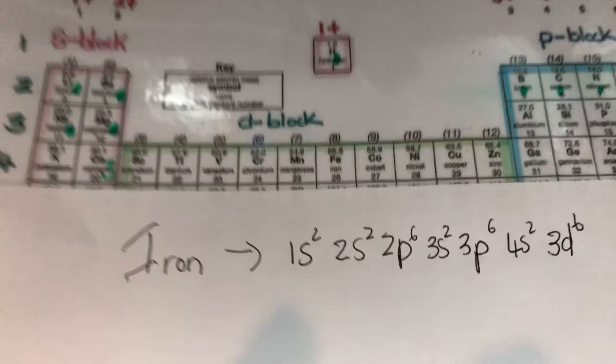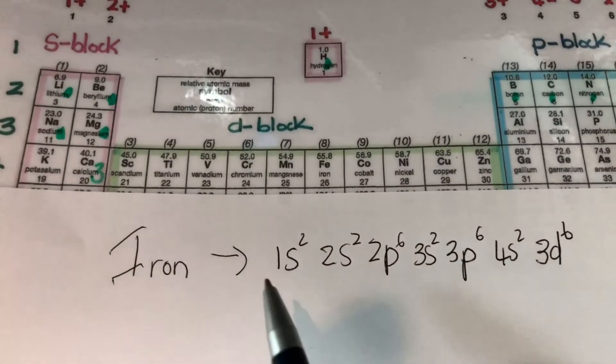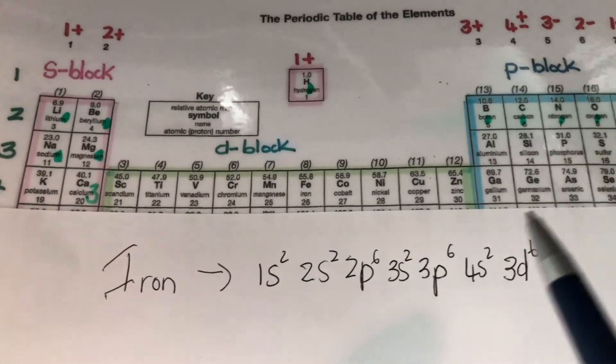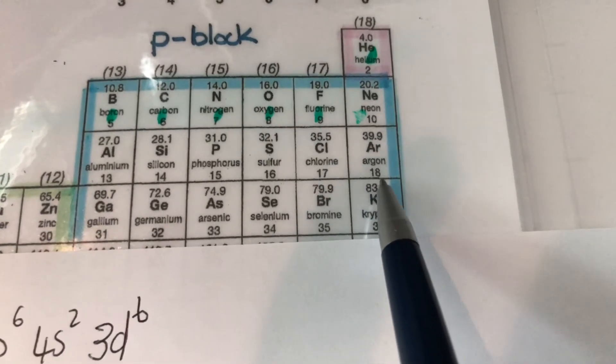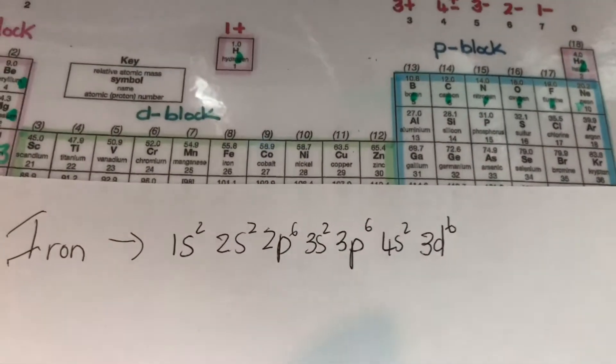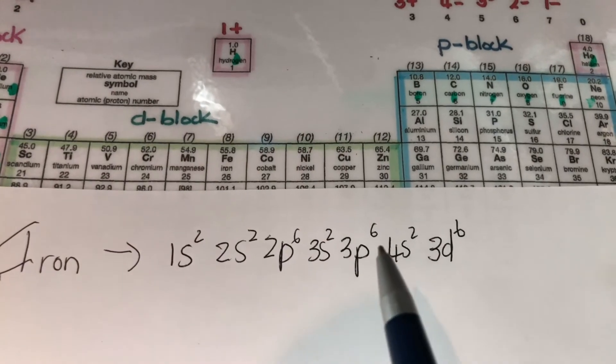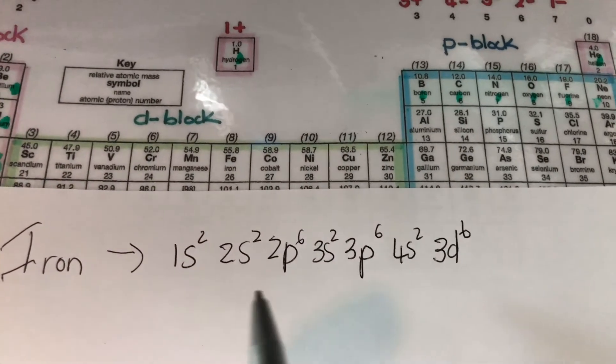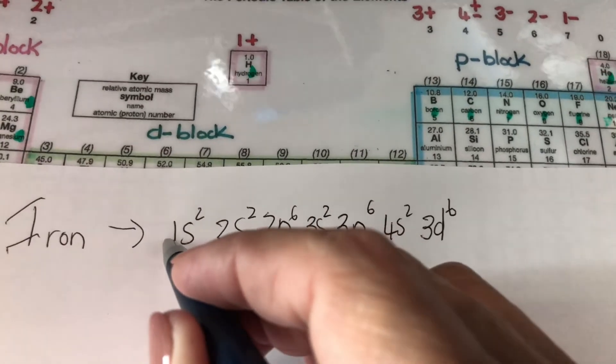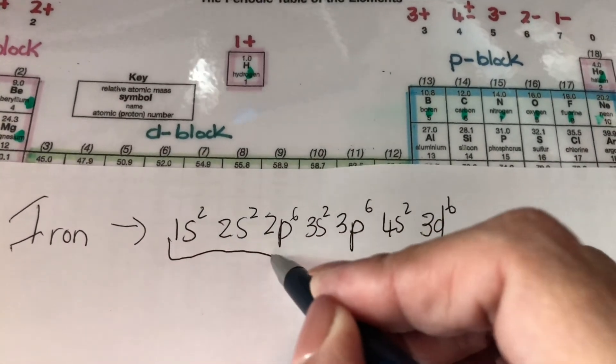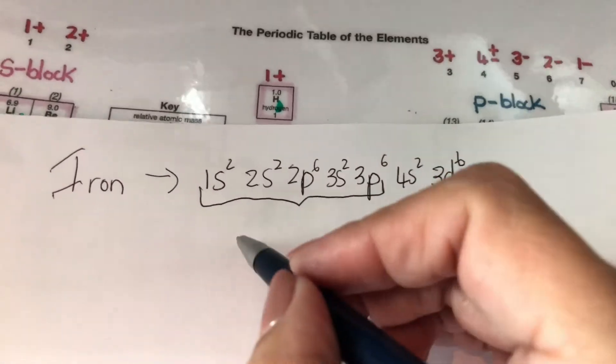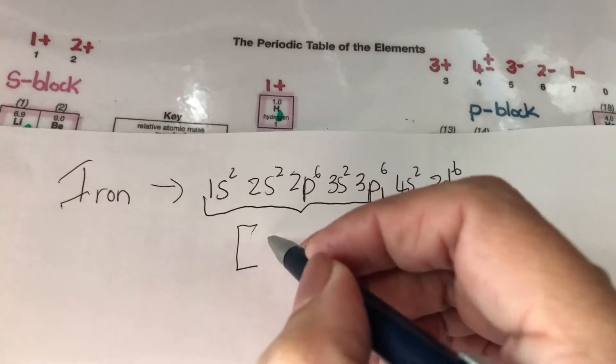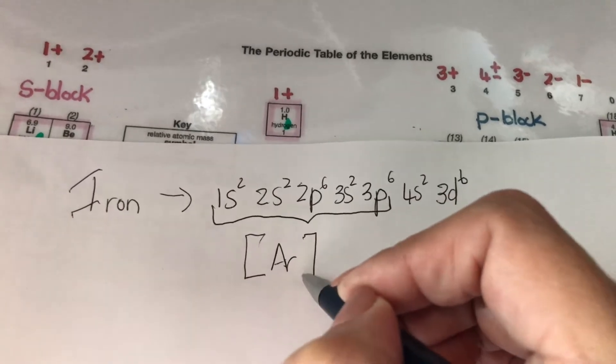Right, so once again I can abbreviate this. So instead of writing all of this, I can go from iron backwards and find the very first noble gas and the very first noble gas is argon. Argon's got 18. So if you look at this, this is first 10, 12, 18. This part over here is the first 18 electrons. So instead of writing all of this down, I can substitute this with the symbol argon to say, right, it's argon.